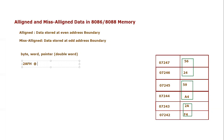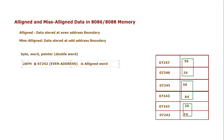Address 07242 is an even address, so the lower byte is stored at the even address — this makes it an aligned word. Similarly, 59A4 is stored at 07244, which is also an even address, so it is also an aligned word.